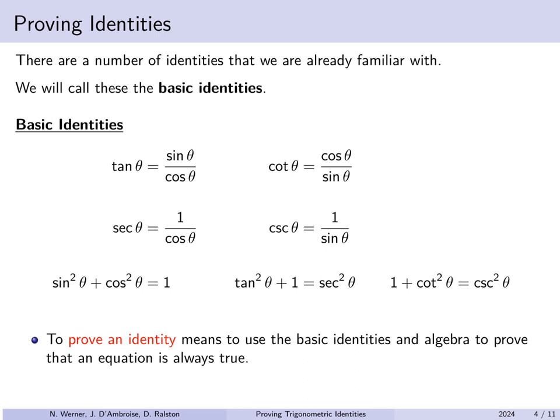To prove a new identity means not just establishing it's true for some values. It is not enough to pick a given value of theta and check that it is true — you need to show it is true for all values of theta. Synonyms for "prove" in mathematics include establish, verify, and show. These all mean the same thing: use allowable steps to demonstrate the given identity is always true no matter what.